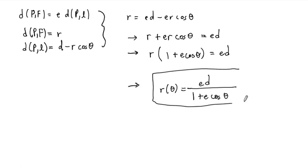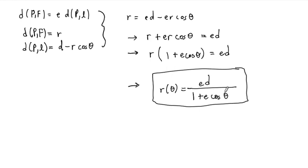This is the general formula for any conic section — for E equal to 1, greater than 1, or less than 1. For any eccentricity, this is the formula for the conic section whose directrix is X equals D, for a positive D — a positive directrix.